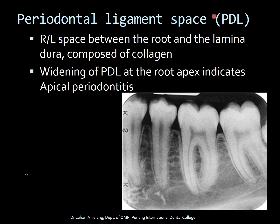Periodontal ligament space, or PDL, is the periodontal ligament appearing as black lines or radiolucent space seen between the root and the lamina dura. It is composed of collagen, which is soft tissue, and that is why it is radiolucent. PDL also has diagnostic importance — widening of the PDL at the apex of the tooth indicates apical periodontitis, and this is something very important to understand when interpreting radiographs.